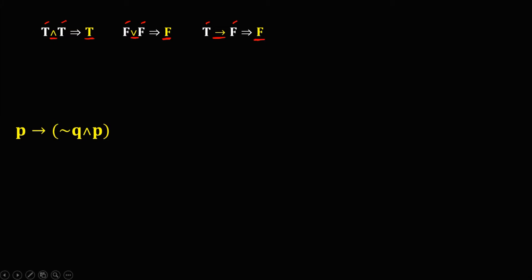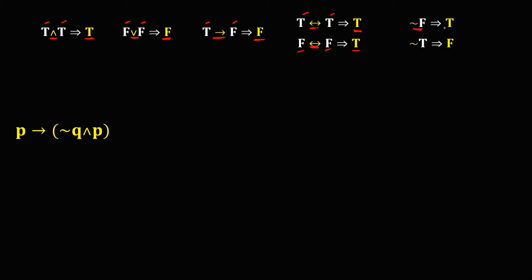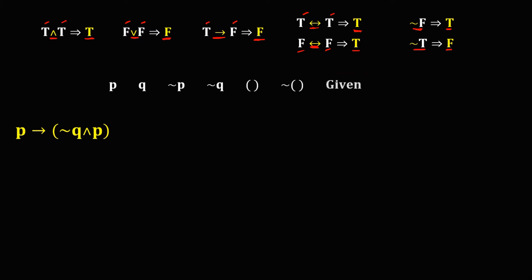For biconditional, the double arrows — if the same then the truth value is true. For negation, not false is true and not true is false. On the top of the table, always start with the given variables — that's P then Q, followed by the negation of P, the negation of Q, then the parentheses, the negation of parentheses, and the last column must be the given. These are the guides when constructing a truth table.